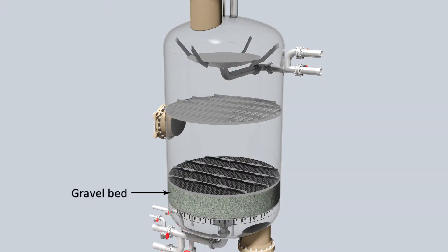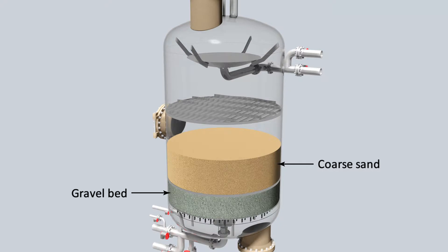The bed is composed of 18 inches of gravel, 30 inches of coarse sand, and 30 inches of fine sand, resulting in a 60 inch layer of effective media filtration.